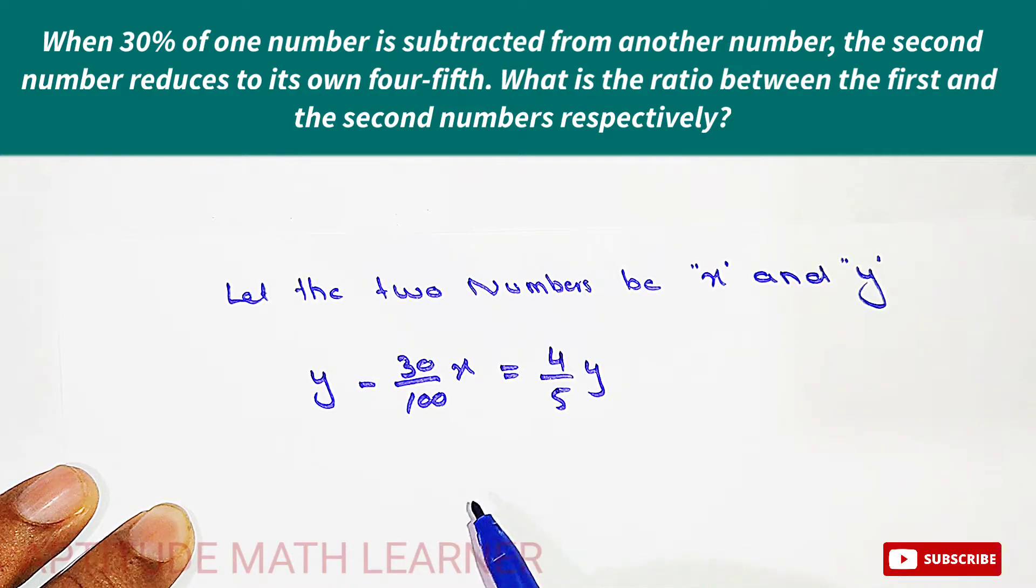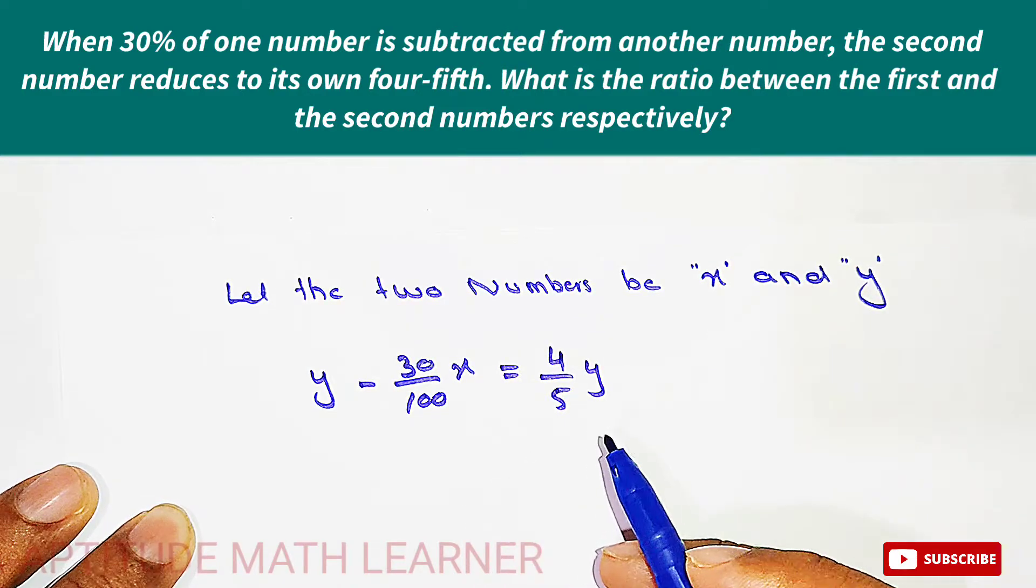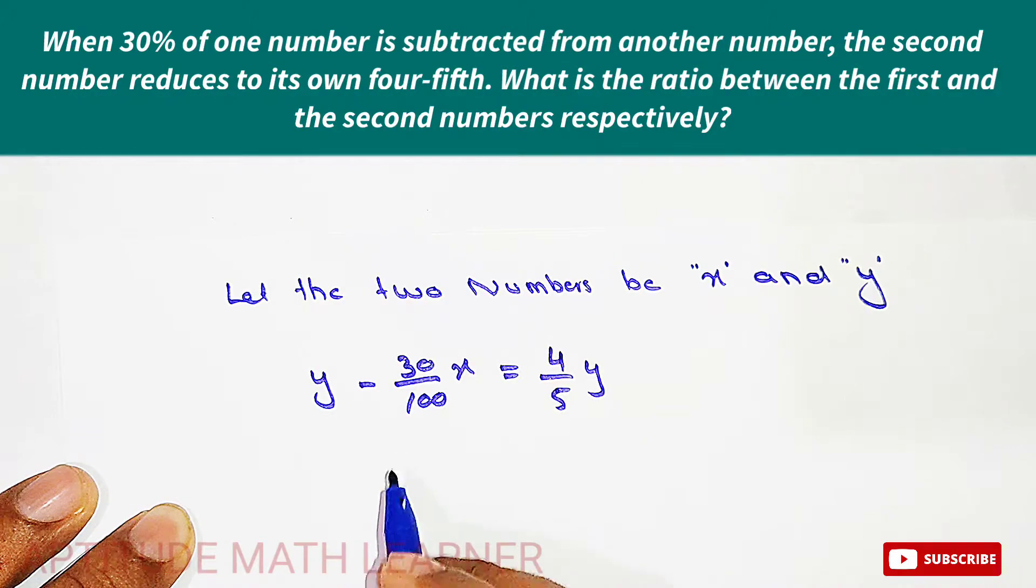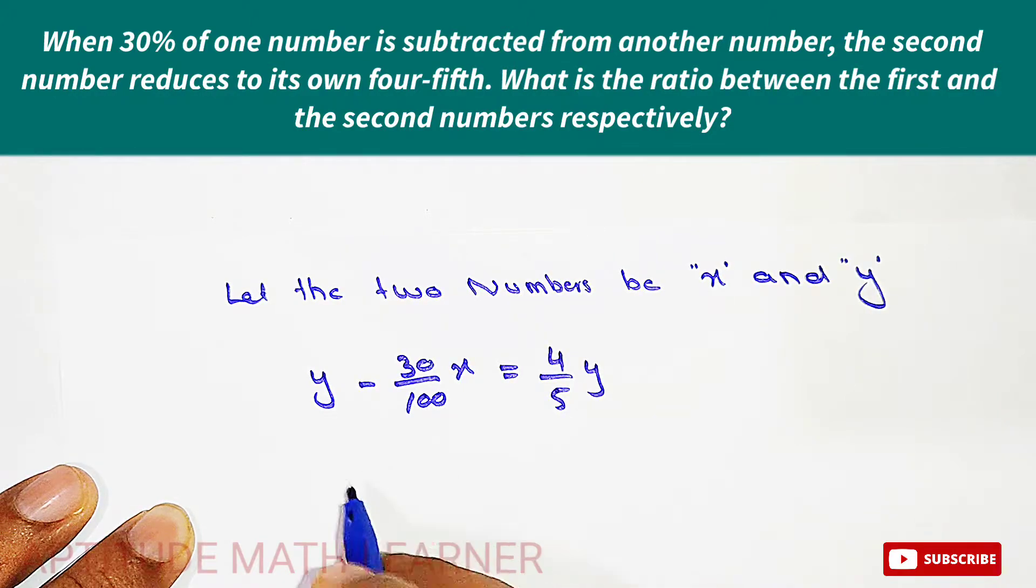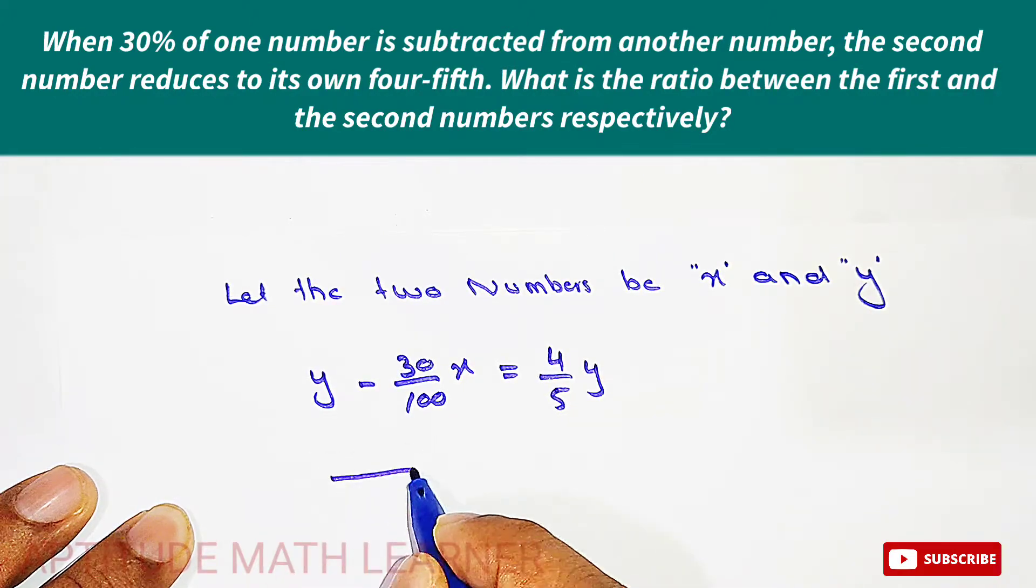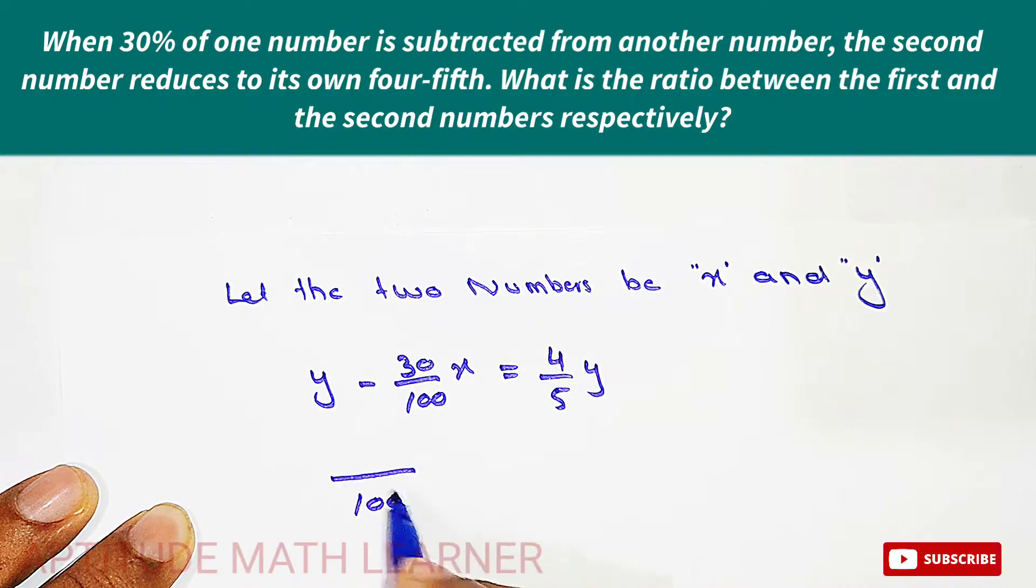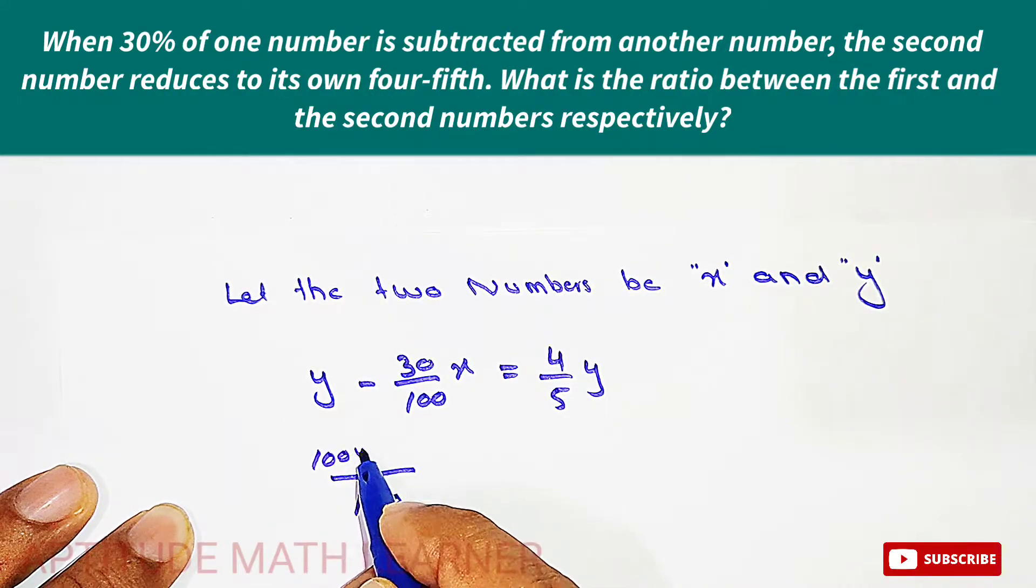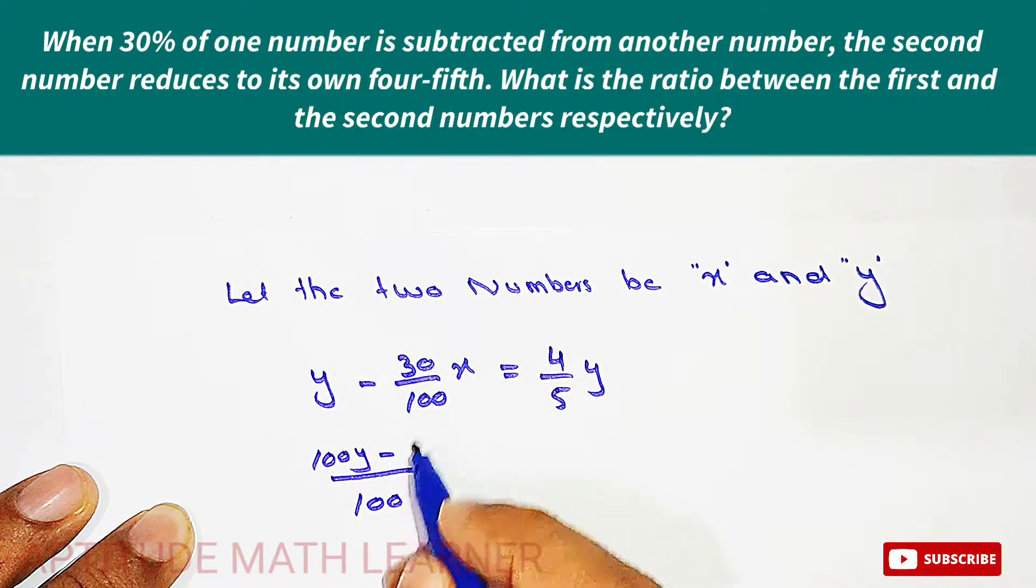So for this we take the LCM, that is 100. So this 100 multiplies by y, so 100y minus, 100 cancels out and this becomes 30x.